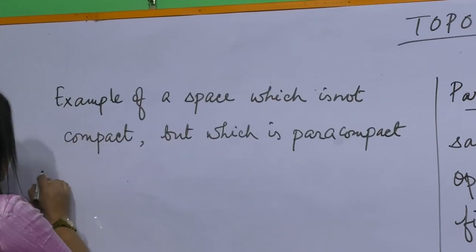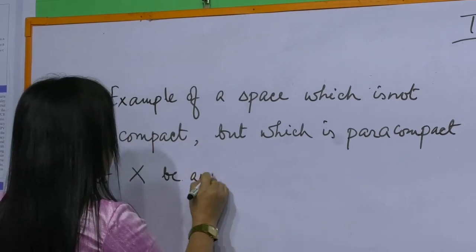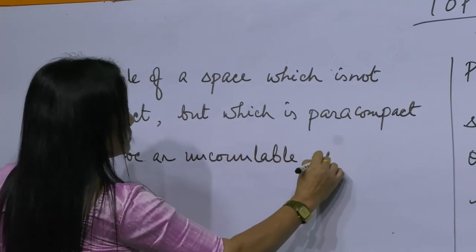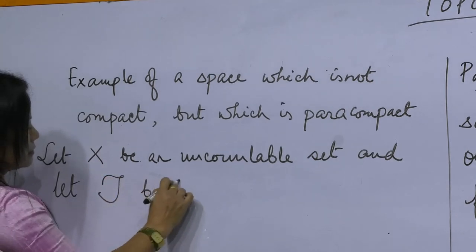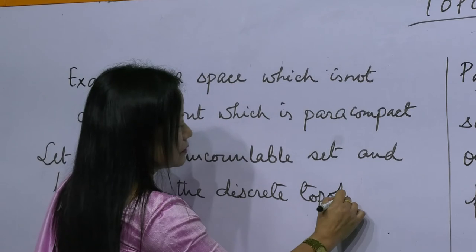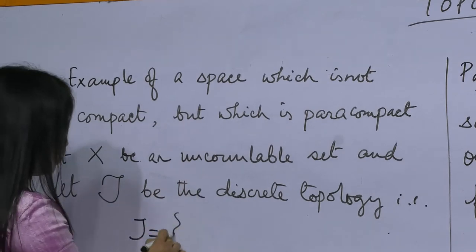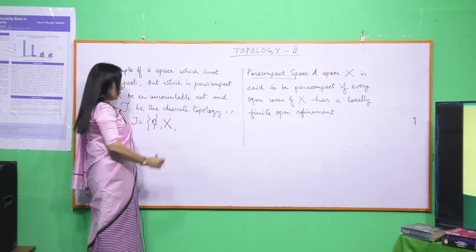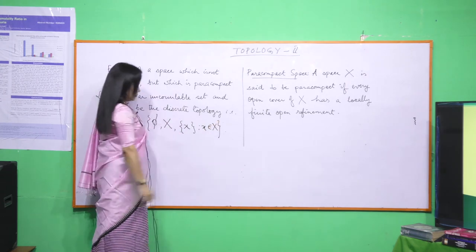For this, let us take an uncountable set and we consider a discrete topology. T is the topology consisting of the empty set, the full space X and the collections of all singleton sets of X. We consider this topology.